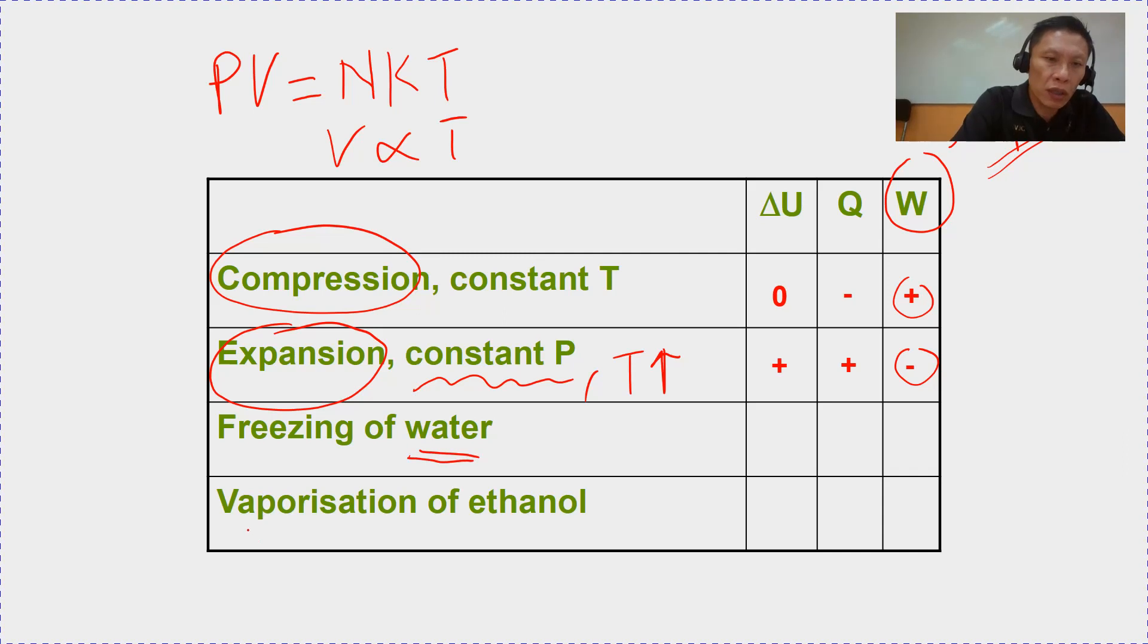So for the last two, we are not talking about gas anymore. We are talking about water and ethanol. However, we can still use the same argument to complete the table. So, when water freezes, it expands, so the volume increases. So, this sign here must be negative as well. Secondly, we also know that in order for water to freeze, heat must be taken out from the system. So, the heat supplied must be negative. Because water freezes, so you need to extract heat away from the water. So, if both the heat supplied and the work done on is negative, then there can only be one possibility for the change in internal energy. It must be negative as well.